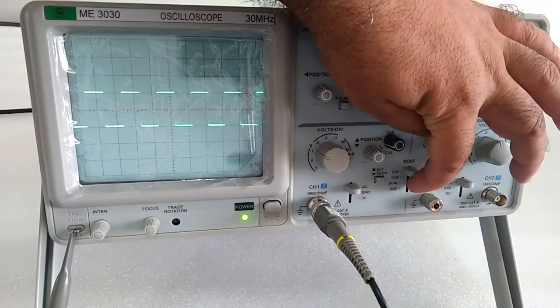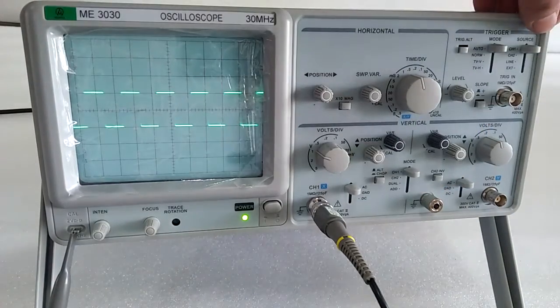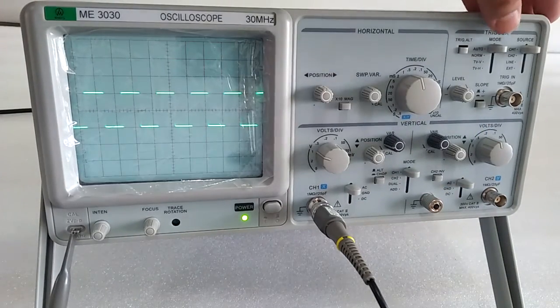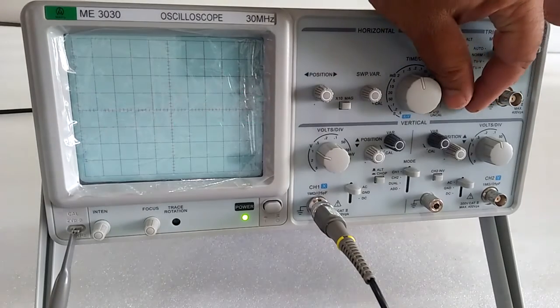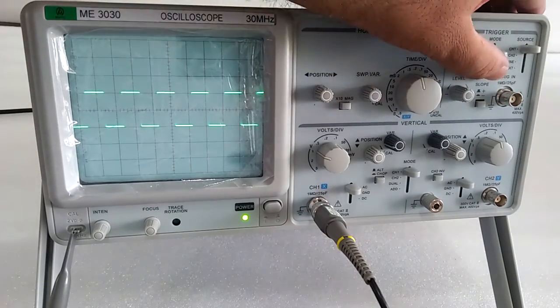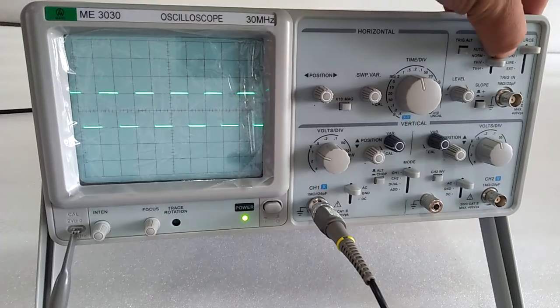If you use channel 1, put the mode selection on channel 1. Set the triggering source to channel 1 and mode to auto. If you put it on normal, then use the level to set the wave. This is the TV vertical and TV horizontal.